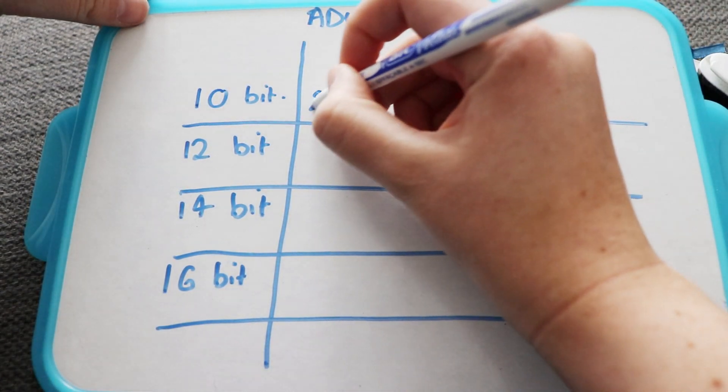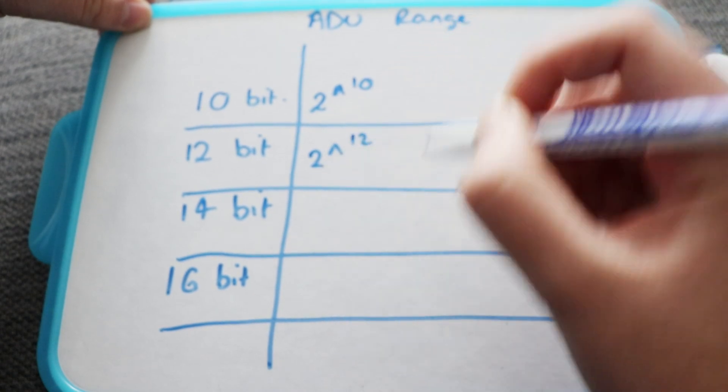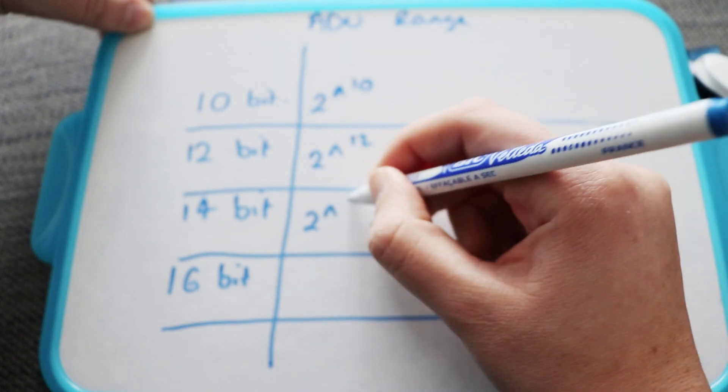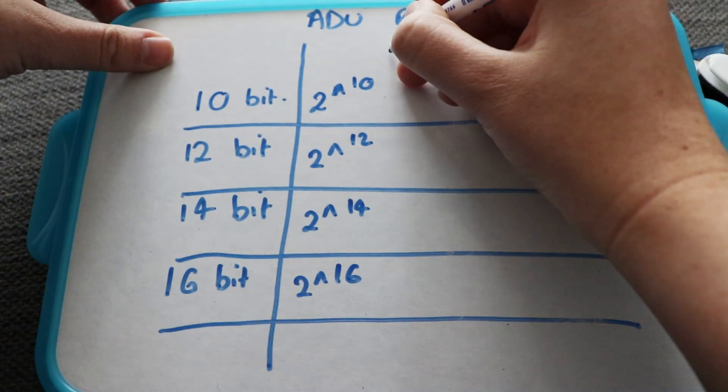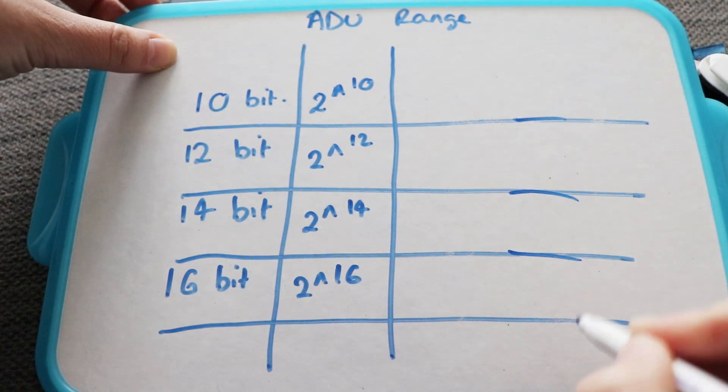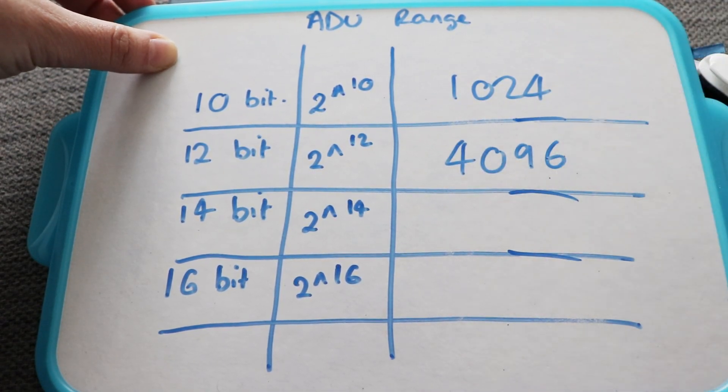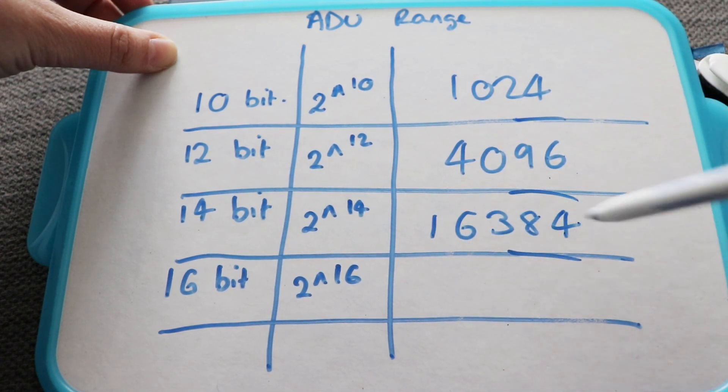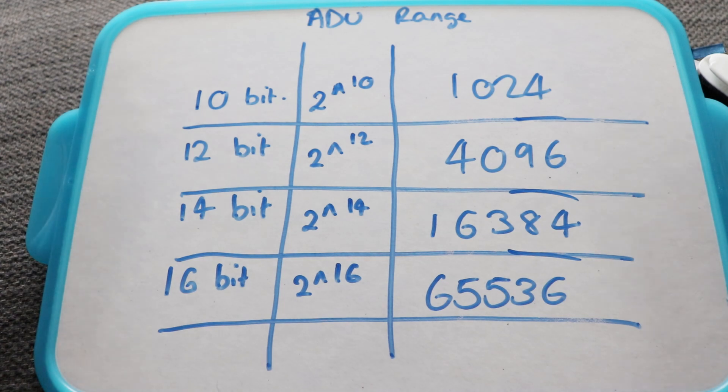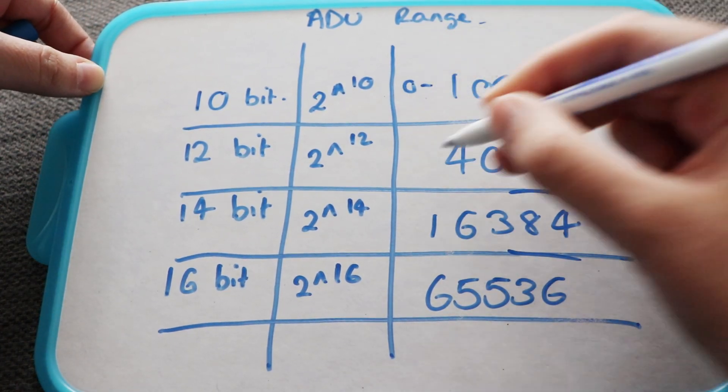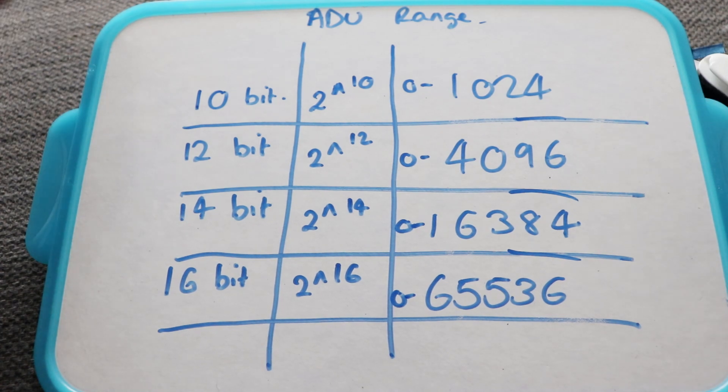So for 10 bit, the formula is 2 to the power of 10. For 12 it's 2 to the power of 12. See we're sensing a bit of a theme here. 2 to the power of 14. So let's quickly do those calculations. So it's 1024, 4096, 16384, and 65536. So we're going from 0 to 1024, 0 to 4096, 0 to 16384, and 0 to 65536.